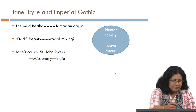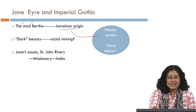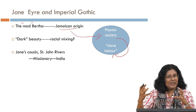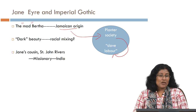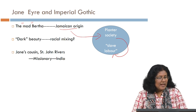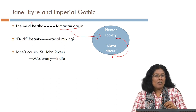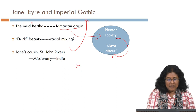The mad Bertha is Jamaican in origin — a British colony. Jamaica is a planter society that depended on the slave labour of the native. Bertha is the hidden wife of the hero; nobody knows she is locked upstairs. She is referred to as the 'dark beauty' — beautiful, but dark. Critics such as Suzanne Daly suggest there is a racial mixing to her origins, and this connects her to the idea of the Imperial Gothic in a British setting.